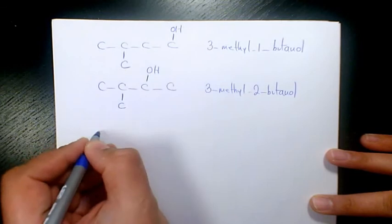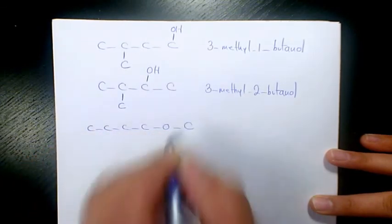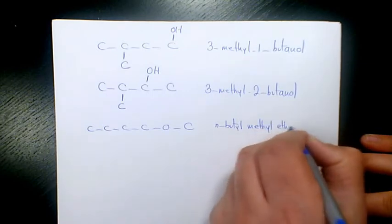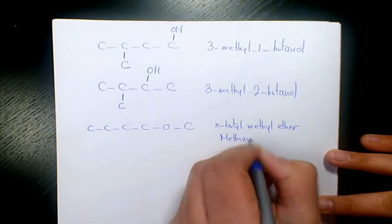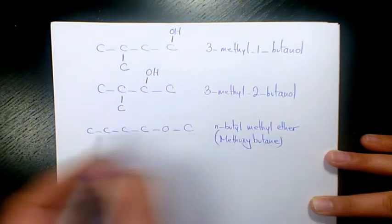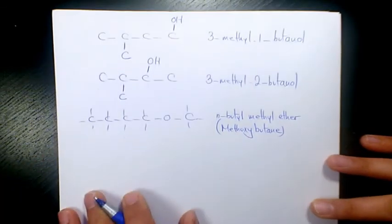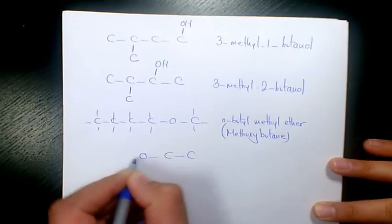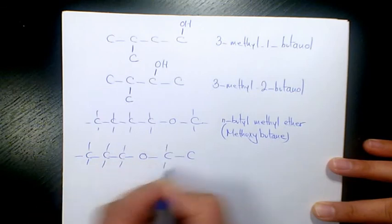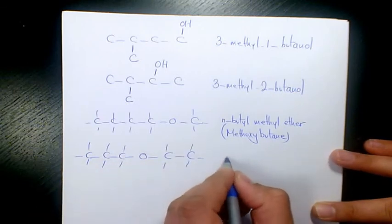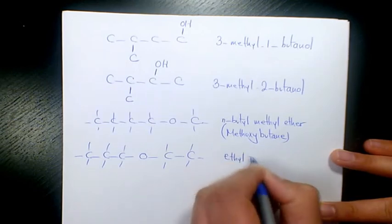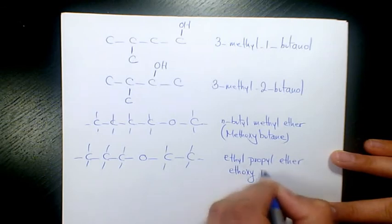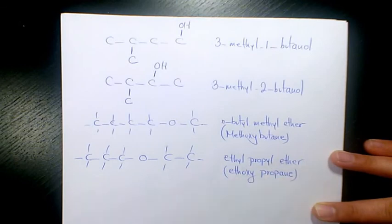Now let's talk about ethers. The first ether is going to have five carbons total — one side we have four and one side we have one — so we have n-butyl methyl ether, or we can say methoxybutane. Next one is going to be two carbons on one side and three on the other side, so that will be ethyl propyl ether, or we can call it ethoxypropane. The second one is the IUPAC name and the first one is the common name.